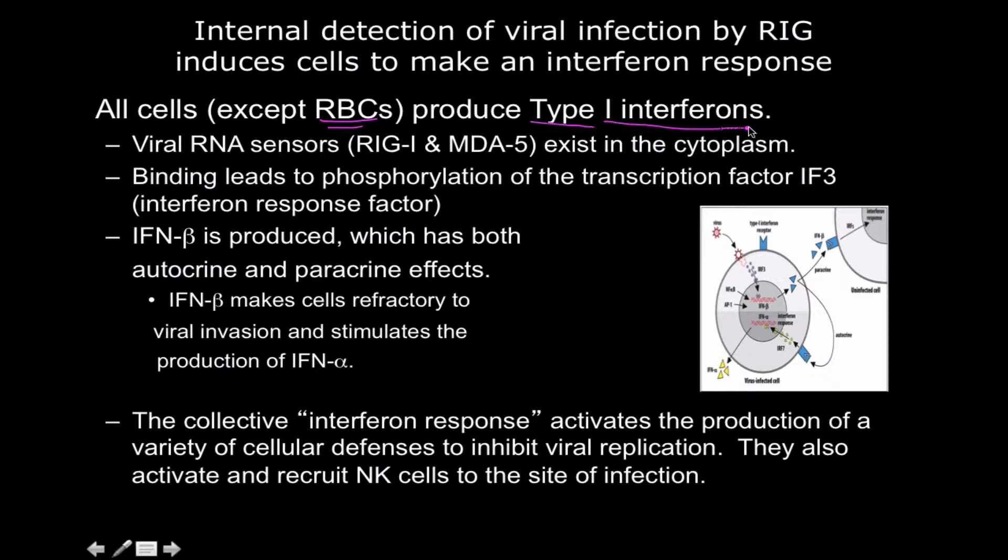And there's a lot of types of type 1 interferons. We'll talk about two that are really important. But for this, viral RNA - notice that it's just RNA. So viral DNA is a little bit more difficult to sense in terms of structures of it inside of our cells. That's more or less sensed by the same way we would sense bacterial DNA. But viral RNA sensors known as RIG1 and MDA5 exist in the cytoplasm. And again, we're talking about any cell here.